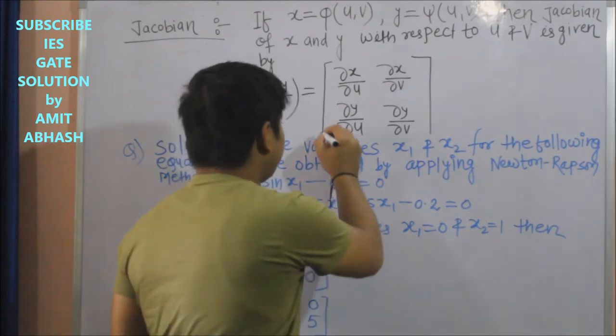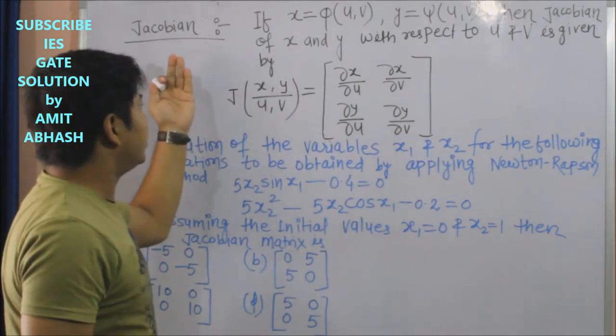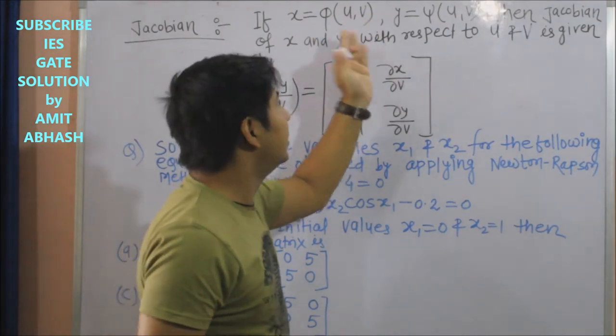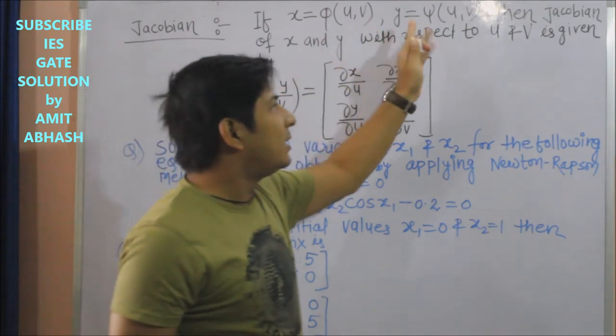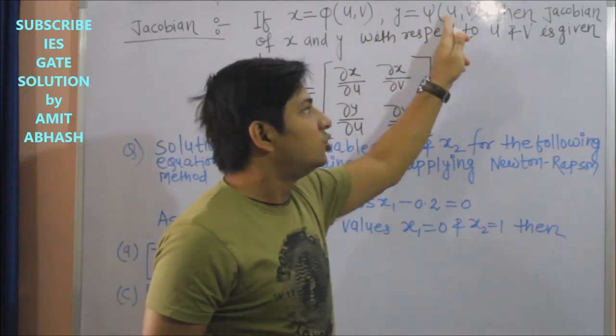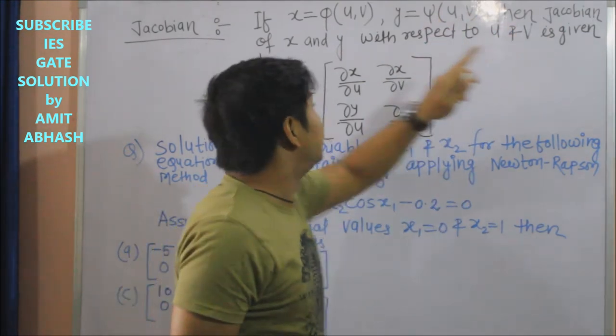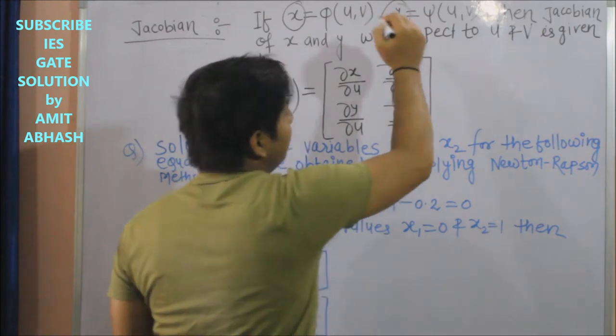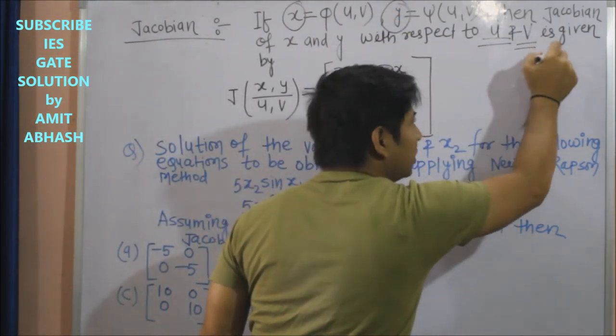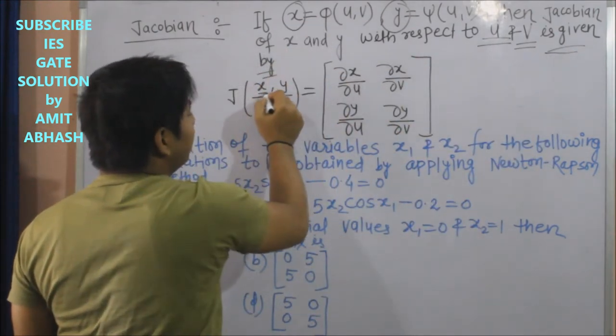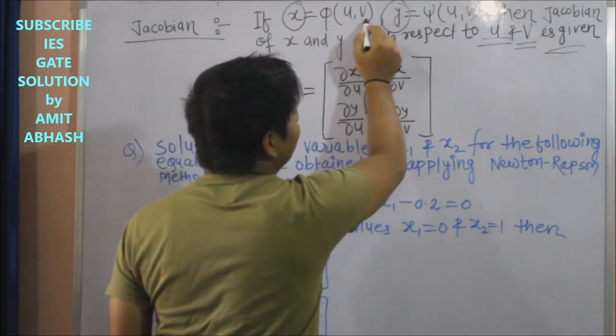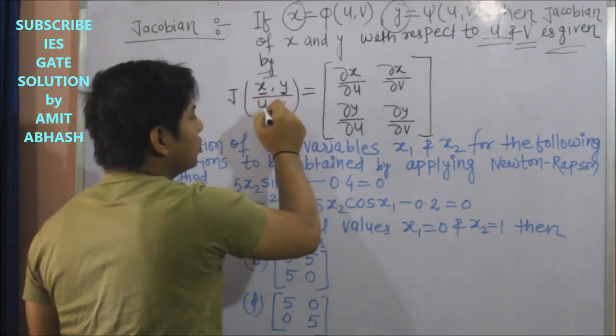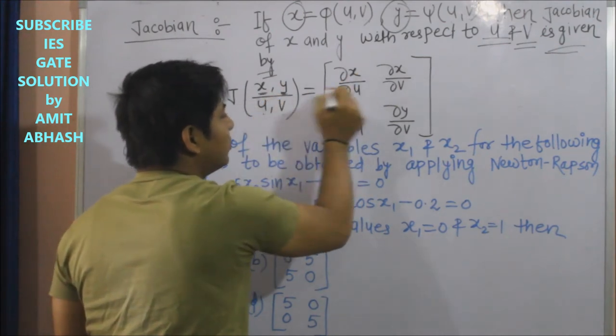What is Jacobian exactly? If x is function of u and v, any variable u and v, and y is also function of u and v, then Jacobian of x and y with respect to u and v - the left side variables you write on top, and whose function it is (u and v) you write below. Now x should be partially differentiated with respect to u, that you will write here.